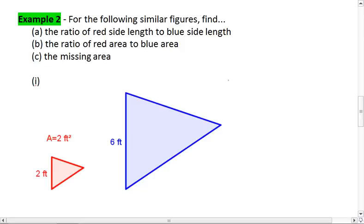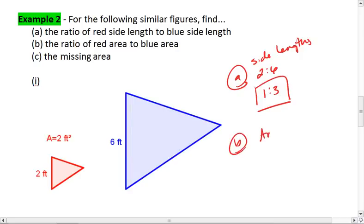Our answer for the first one: the ratio of the side lengths is 2 to 6, which reduces down to a 1 to 3 ratio. This means that the ratio of their areas is 1 squared to 3 squared, which is actually 1 to 9.